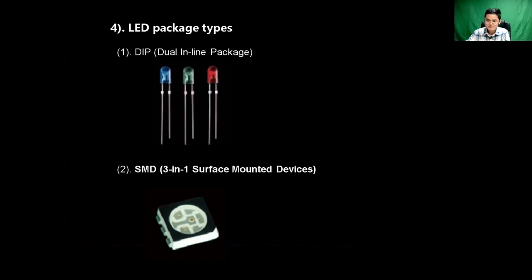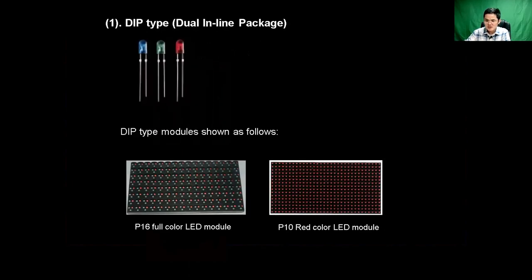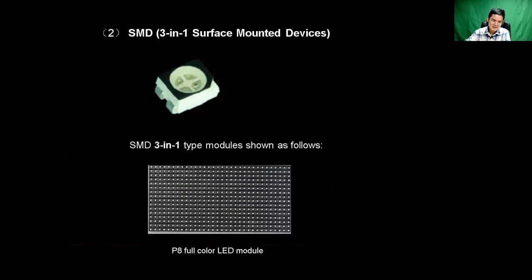You can see the photo. DIP is the earliest developed technology. It is usually suitable for outdoor large-pitch display screens, such as P16 full-color modules and P10 red-color modules. It was popular in the past. But now SMD modules are the most popular because SMD color is more uniform and the flatness is better. SMD technology has developed rapidly and the cost has been reduced a lot.